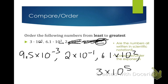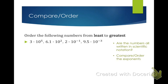This first one becomes the smallest number because it moves the decimal over three spaces to the left. This one is next because it only goes over negative one. Then we have 610-something, and then the last one has a lot of zeros. That's pretty easy because they're all in scientific notation.